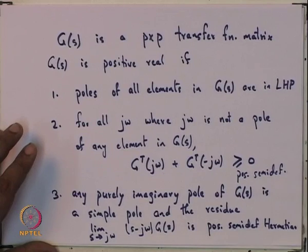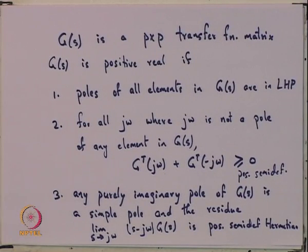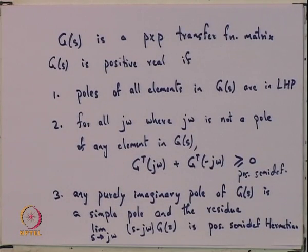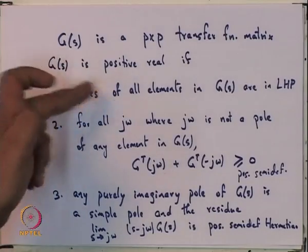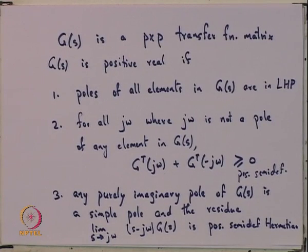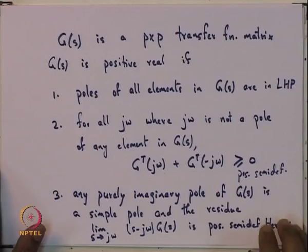So this is the definition for positive realness as far as matrices are concerned. If you take a P×P transfer function matrix G and want to check whether it is positive real, you apply these three criteria. And in the earlier lecture when I talked about the positive real lemma, G could just be taken to be positive real with this definition. As far as the realization is concerned — whether single input single output or multiple input multiple output — the realizations would be in terms of those matrices and the matrix conditions remain unchanged.